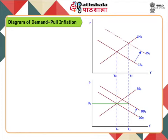Hence, at current price level P0, there is excess demand to the extent of Y0 to Y2. This creates an upward pressure on the price level and, as a consequence, the price level starts rising. The price level rises until excess demand wipes out and aggregate demand equals aggregate supply. Due to the increase in price level, the real value of consumption decreases and the rate of savings rises.